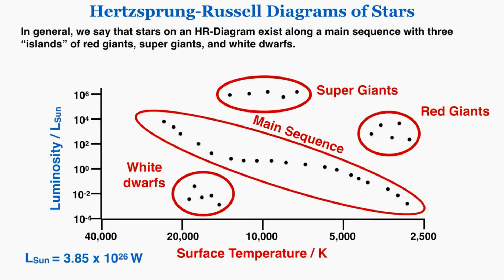In general we say that stars on an HR diagram exist along a main sequence with three islands of red giants, supergiants, and white dwarfs.